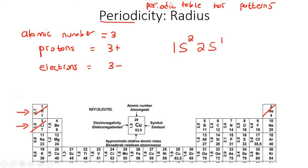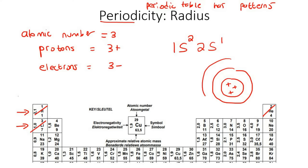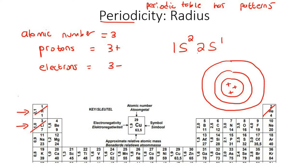That means if you draw lithium with its nucleus, it would have three protons and then two energy levels going around the nucleus. Some of the electrons would be in the first row and some of the electrons would be in the second energy level.